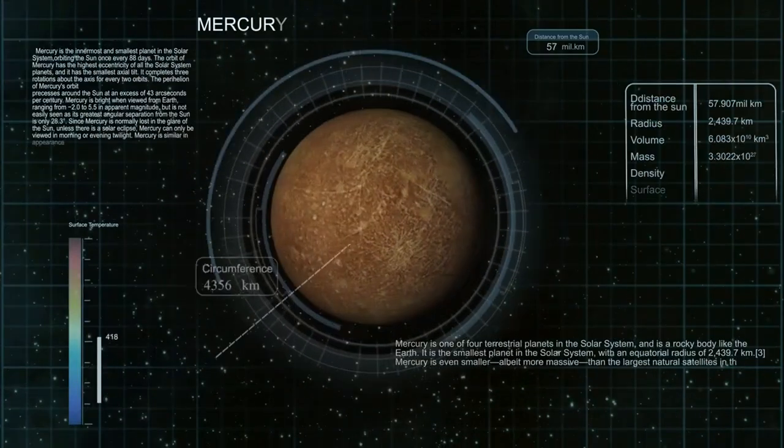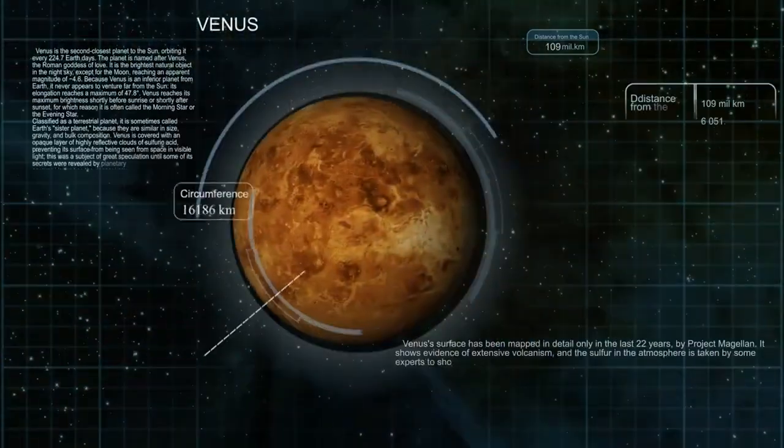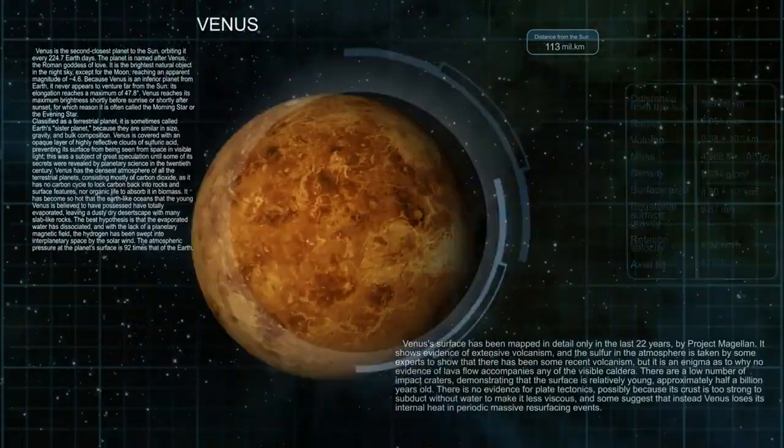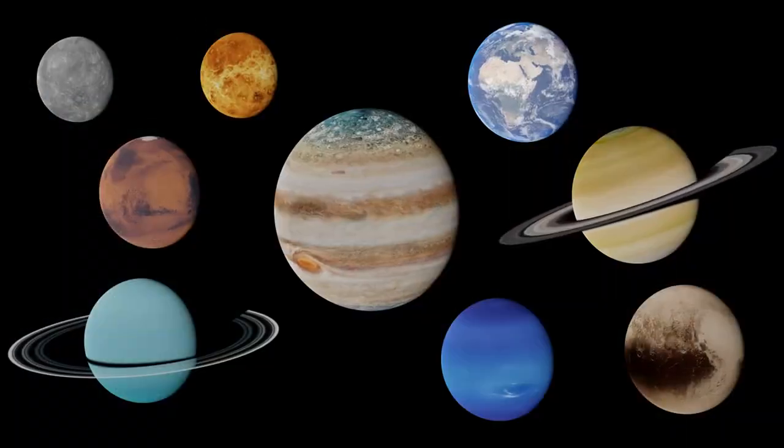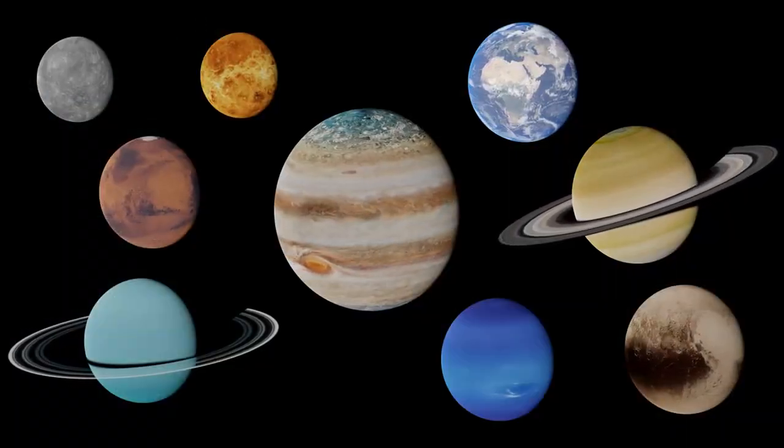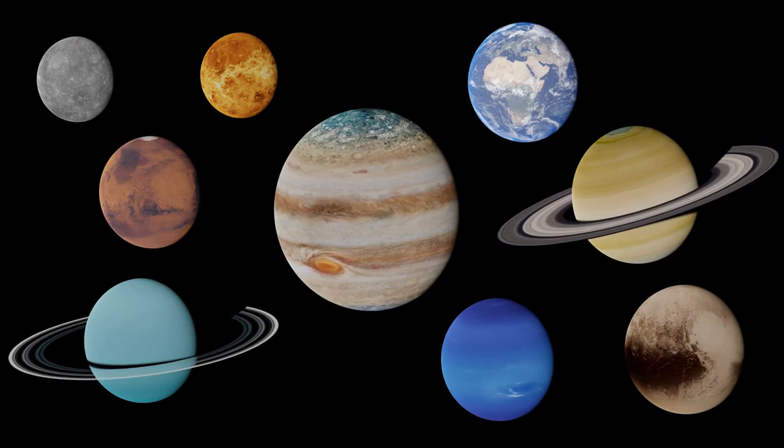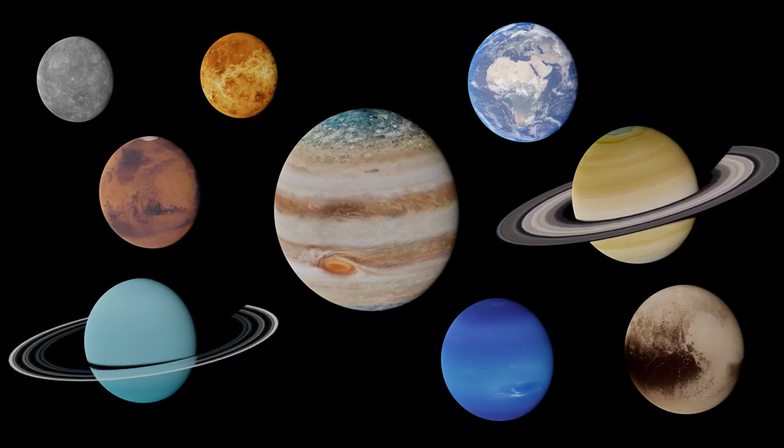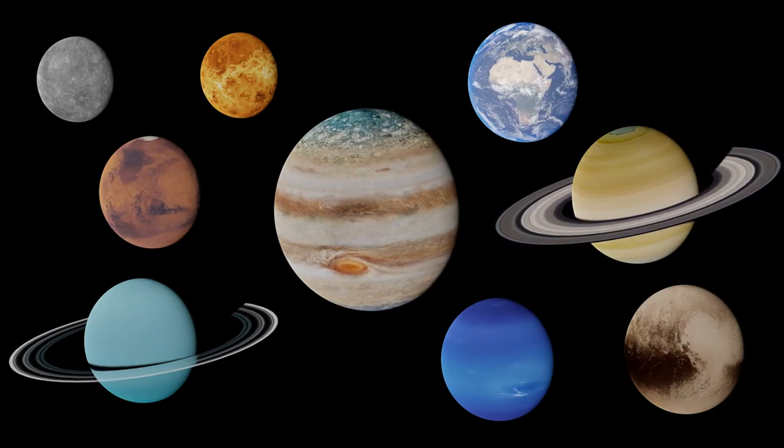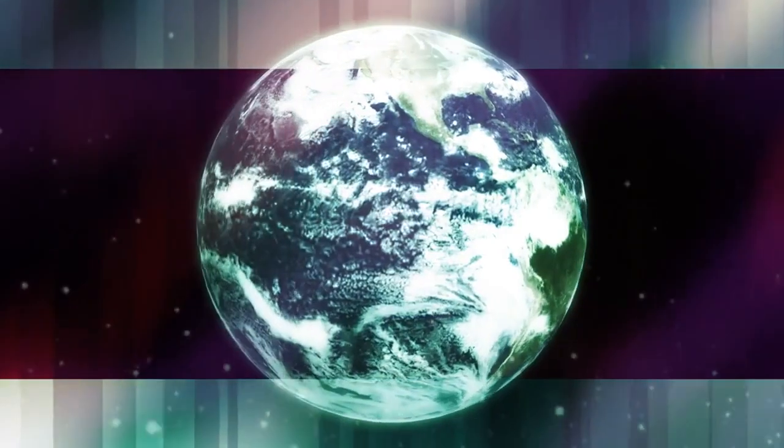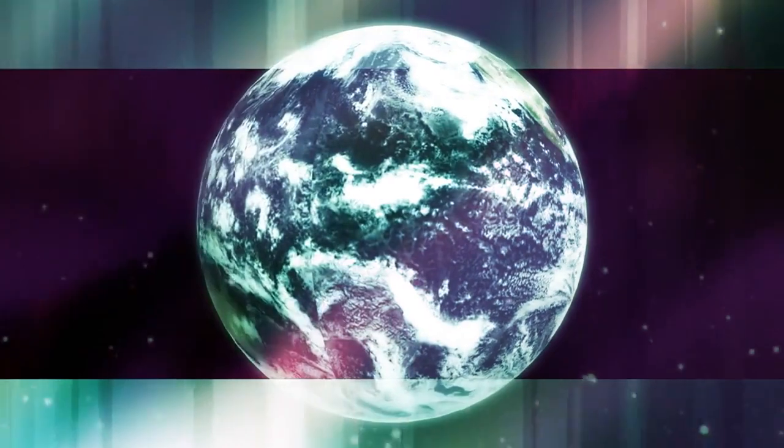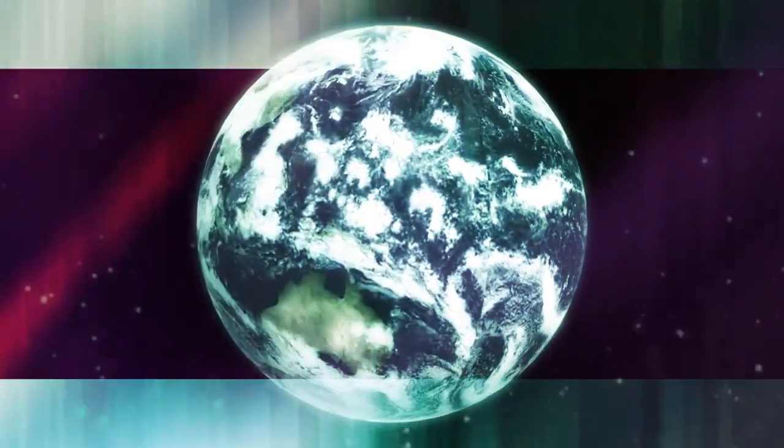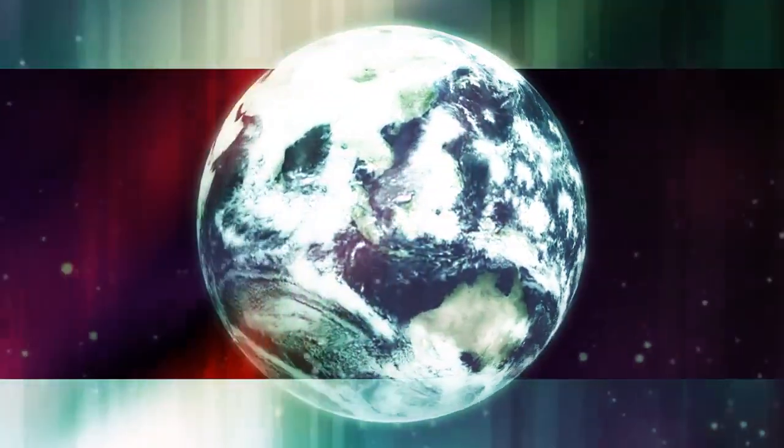Research into the dynamics of our solar system also contributes to our understanding of planetary systems around other stars. By comparing our solar system to others, scientists can identify common patterns and unique features, enhancing our knowledge of the formation and evolution of planetary systems. Ultimately, this research enriches our understanding of the universe and our place within it, highlighting the interconnectedness of all celestial phenomena.